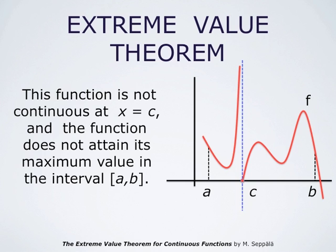In this picture we have the graph of a function which is not continuous at x equals c. This function takes arbitrarily large values on the interval from a to b and does not attain its maximum value. It does attain its minimum value, which is zero at x equals c, but the red curve takes arbitrarily large values — and this is possible precisely because the function is not continuous at x equals c.